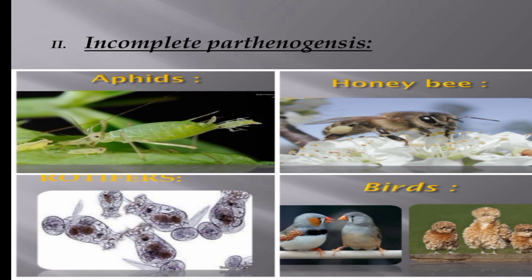The second example of incomplete parthenogenesis is the honey bee. The fertilized egg develops into females, including the queen bee and worker bees, and the unfertilized egg of the honey bee develops into male bees. Certain rotifers produce two types of eggs: amictic eggs and mictic eggs. Amictic eggs are diploid and cannot be fertilized; mictic eggs are haploid. If mictic eggs are not fertilized, they produce males parthenogenetically; if fertilized, they develop into females.